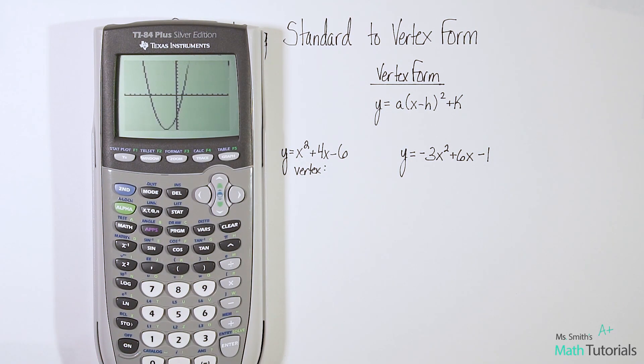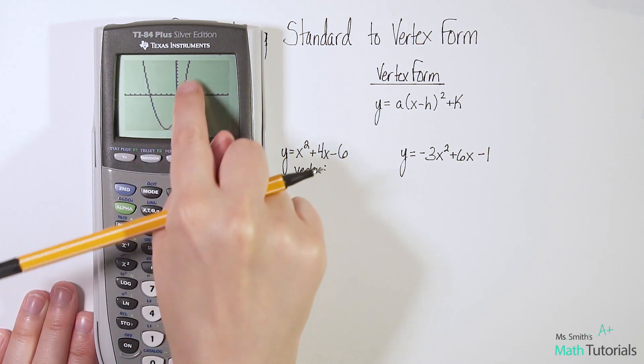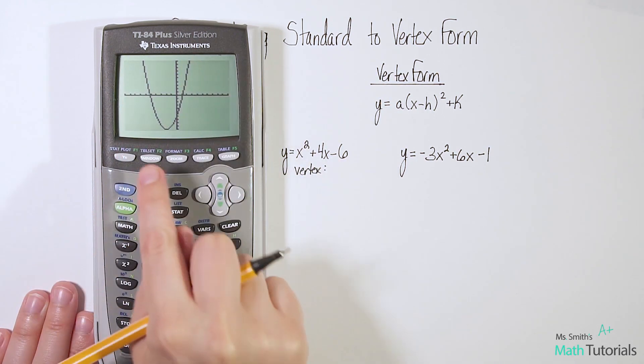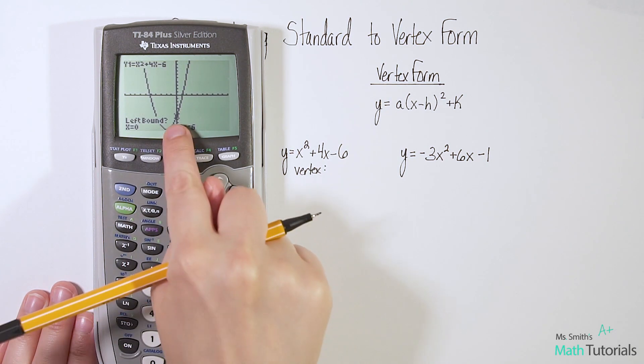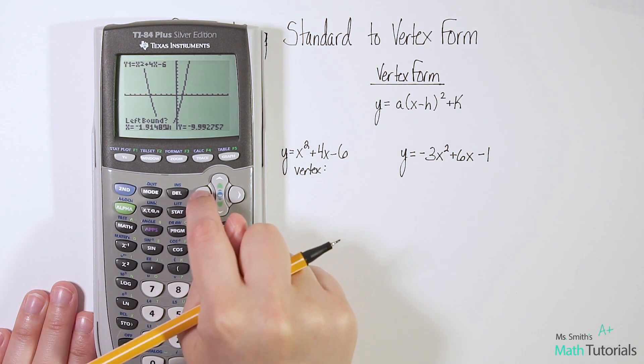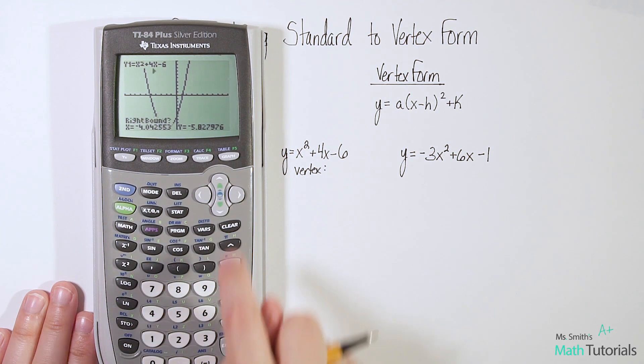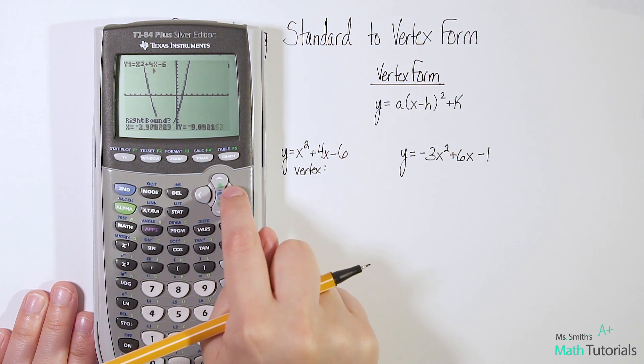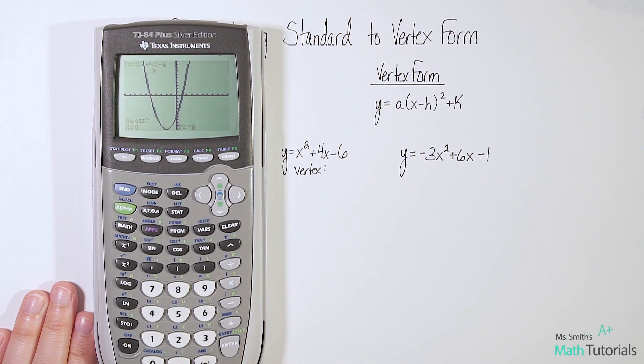Note that that is a minimum vertex we are looking for. It is at the lower end of the graph. It's a u-shaped graph. We want to go to 2nd, trace, minimum, 3. Your little spaceship will show up. We want to go left bound first. Always put it in center and then move it a little bit left, lock it in, back to center, and then a little bit right, lock it in, and hit enter.